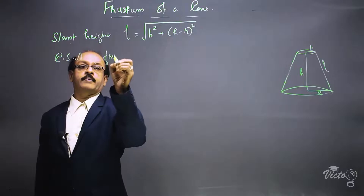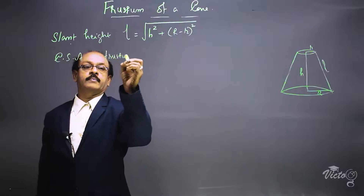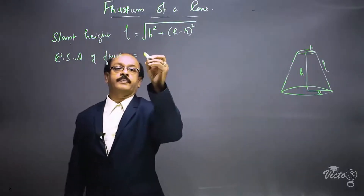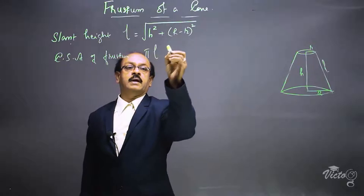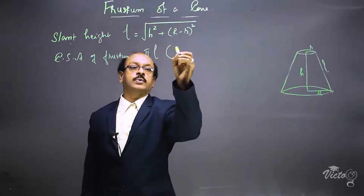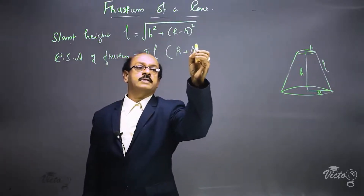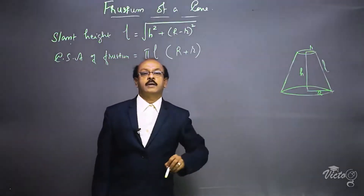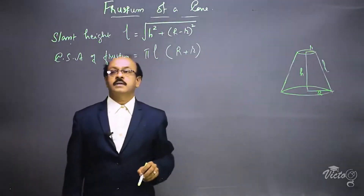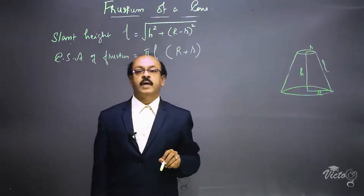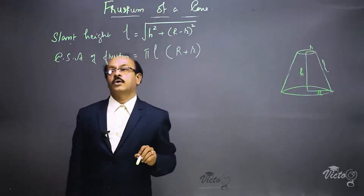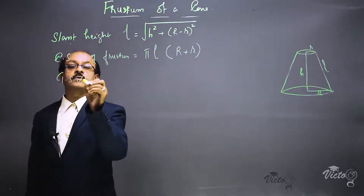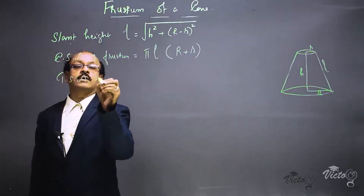The curved surface area of the frustum is equal to pi times l times (capital R plus small r). That is, CSA equals π·l·(R + r).